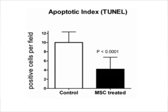Part of the problem in kidney failure and kidney damage is apoptosis, which is associated with acute tubular necrosis. Despite the word 'necrosis,' it's actually apoptosis that's occurring. As you can see in this figure, the apoptotic index as measured by TUNEL is also reduced in the rats that received mesenchymal stem cells.